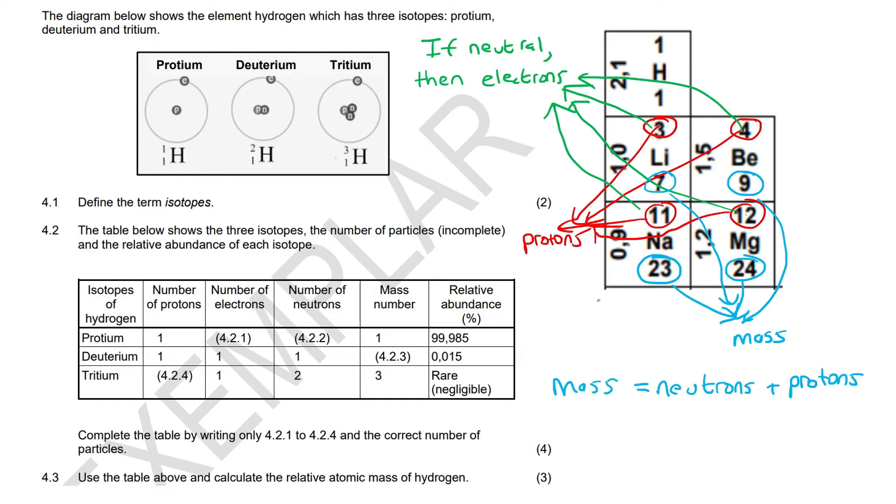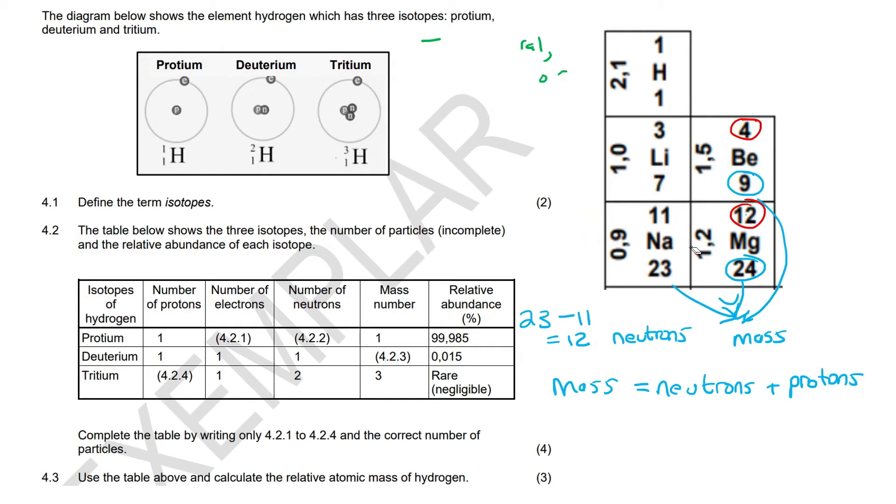So, if I know, for example, that this one over here has 11 protons, then if I say 23 minus 11, that'll give me 12, and that'll have to be the neutrons. So, it's got 11 protons and 12 neutrons, so that the total mass is 23. Right? That's what we've learned up till now. Okay. So, now with that, we can go and begin this question and start talking about isotopes.